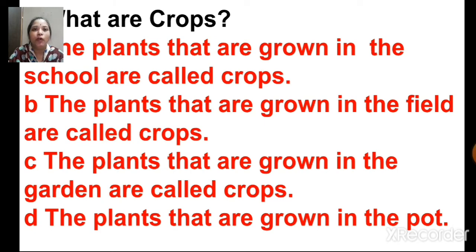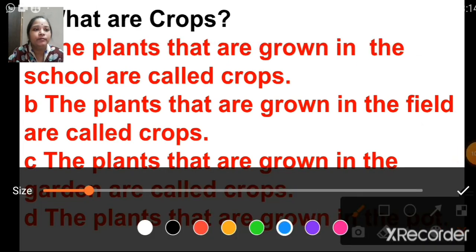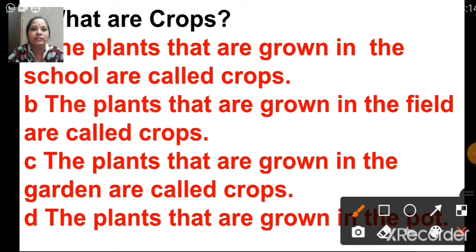What are crops? The options include plants grown in school, plants grown in the field, and plants grown in the garden. The correct answer is B — the plants that are grown in the field are called crops.